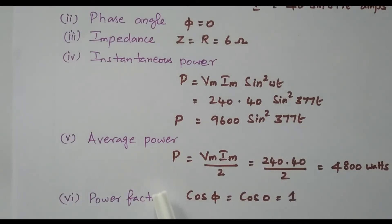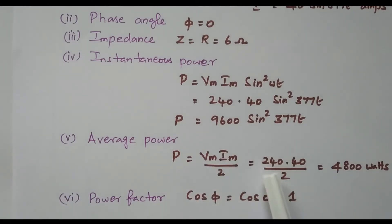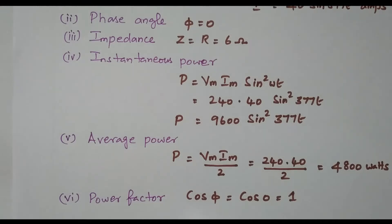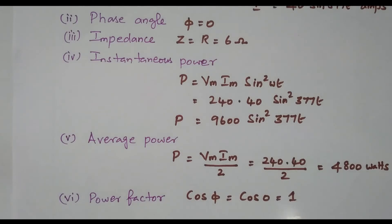Then, the average power. And finally, the power factor. In a resistive circuit, both current and voltage are in phase, so the angle is 0. The power factor is cos(0) = 1. For a purely resistive circuit, the power factor will be 1.